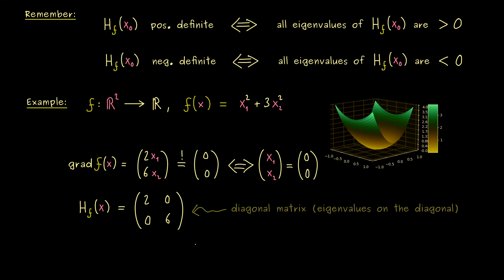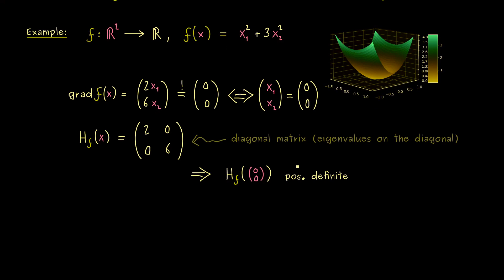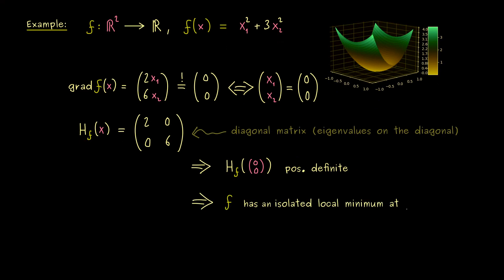Therefore checking our criterion here is now very simple because we immediately see we only have positive numbers on the diagonal. In other words this Hessian matrix here is a positive definite matrix no matter which point x we put in. In particular it's a positive definite matrix if we put in the origin. Hence now we can apply our sufficient condition from the start of the video and conclude that we have an isolated local minimum at the origin. Moreover together with some knowledge of the function we see it's also the global minimum. So this is the result here. We have our minimum at (0,0).